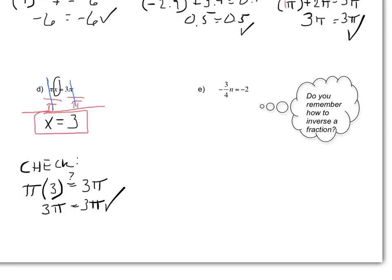On this last one, we've got a little more work to do involving fractions. We're solving for n. What we have to move is negative 3/4, which right now is being multiplied by n. To move it, I need to divide by negative 3/4, and I do that on both sides.